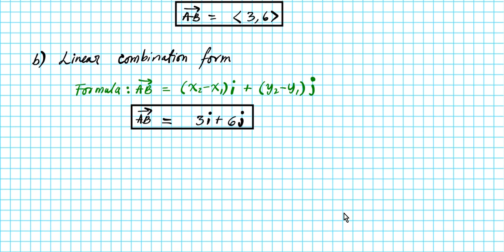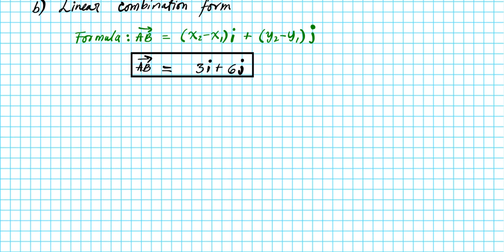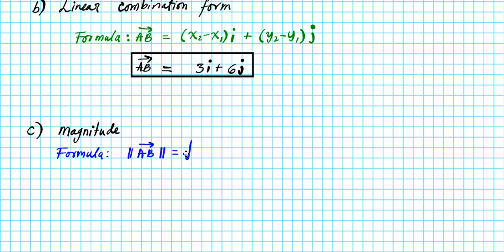For part C, let's start with the magnitude. The magnitude refers to the size — how long the vector is. The formula is basically the Pythagorean theorem: the magnitude of vector AB equals the square root of (x2 minus x1) squared plus (y2 minus y1) squared, where AB represents the hypotenuse.